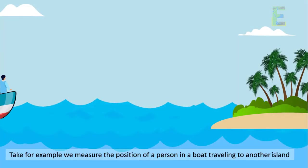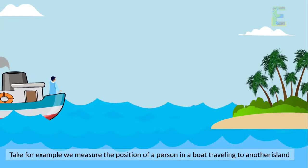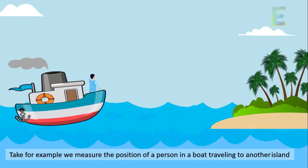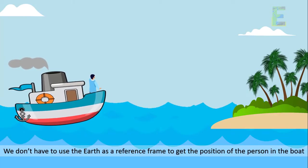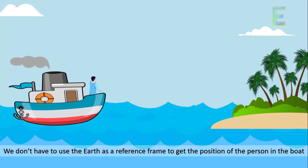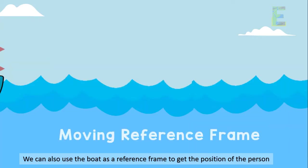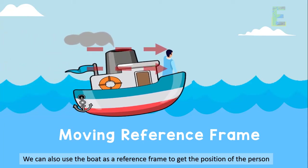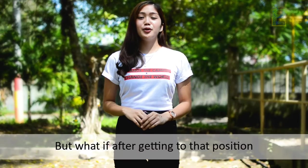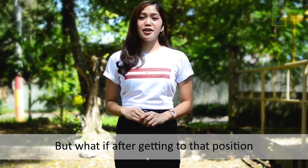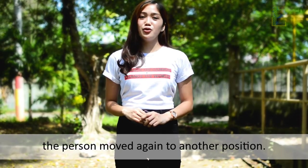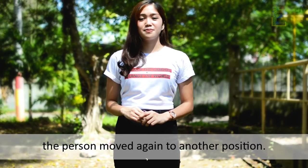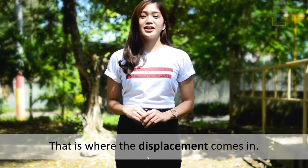Take for example, we measure the position of a person in a boat traveling to another island. We don't have to use the Earth as a reference frame to get the position of the person in the boat. We can also use the boat as a reference frame to get the position of the person. But what if, after getting to that position, the person moves again to another position? That is where the displacement comes in.